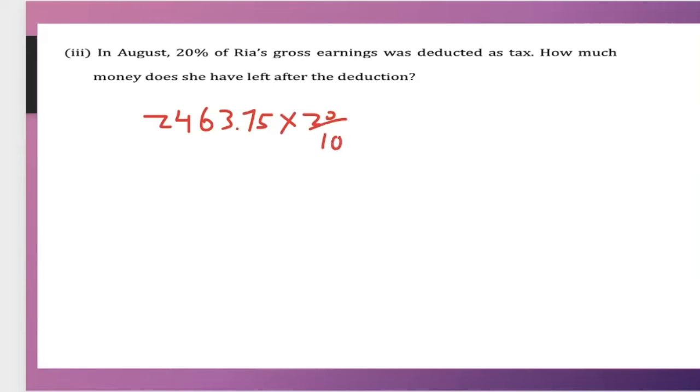This is one way to do it. Find 20% of this. Now, I will multiply $2,463.75 times 20.